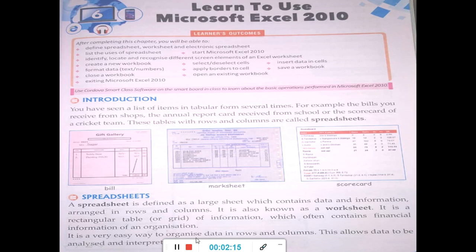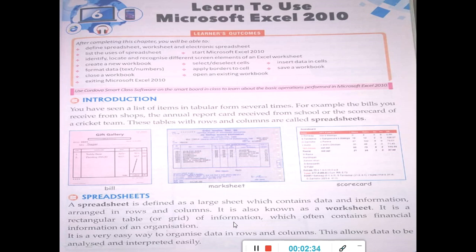Now, what is a spreadsheet? Let us learn in a detailed manner. A spreadsheet is defined as a large sheet which contains data and information arranged in rows and columns. It is also known as a worksheet. It is a rectangular table of information which often contains financial information of an organization. You can also make a mark sheet. It is a very easy way to organize data in rows and columns, and this allows data to be analyzed and interpreted easily.